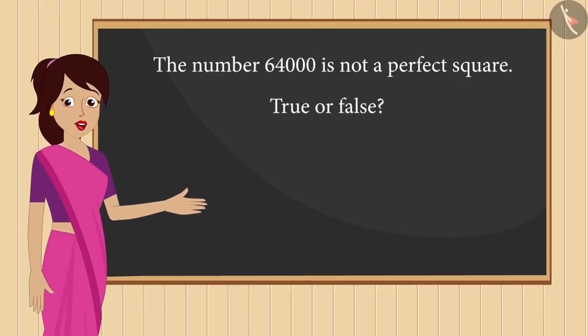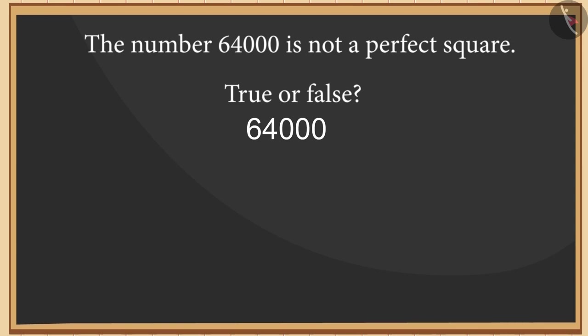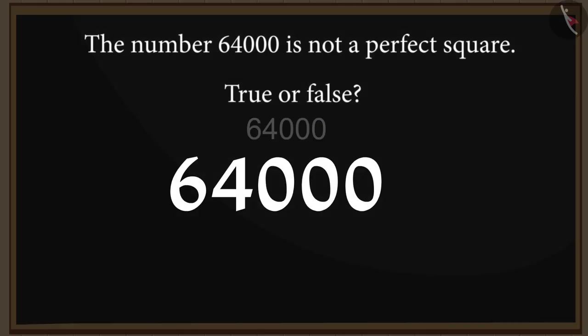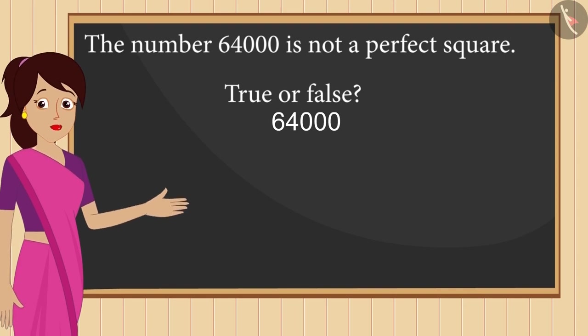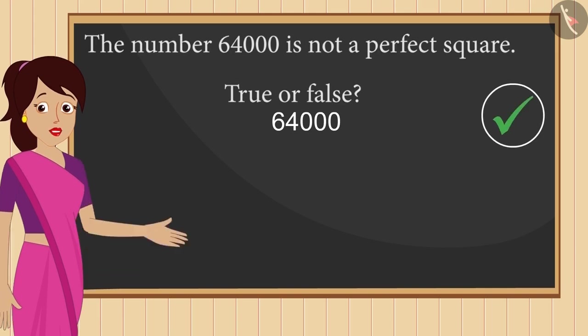Let us now examine this statement. You can pause the video here and think of an answer. If you have assumed this statement to be false, then you may have thought that 64 is a perfect square and as the last digit of this number is also 0, it will be a perfect square. But this is wrong. We know that to be a perfect square, the number of zeros at the end must be even. This number is ending with 3 zeros, which is not an even number. Therefore, this number is not a perfect square, and this statement is not false but true.